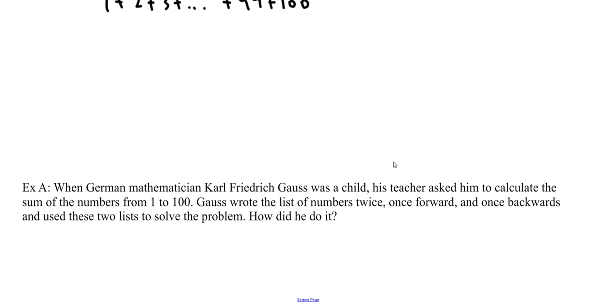Here's your hint. When German mathematician Karl Friedrich Gauss was a child, his teacher asked him to calculate the sum of the numbers from 1 to 100. Gauss wrote the list of numbers twice. He wrote it once forward and once backwards, and then used these two lists to solve the problem. How did he do it?